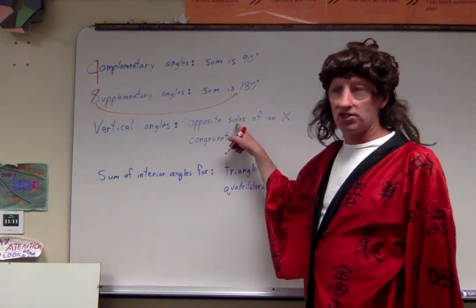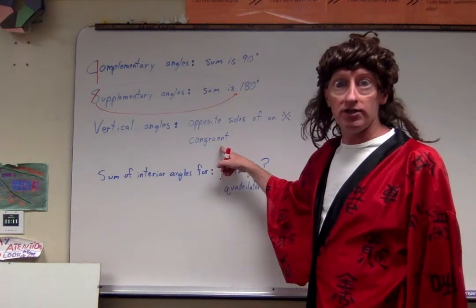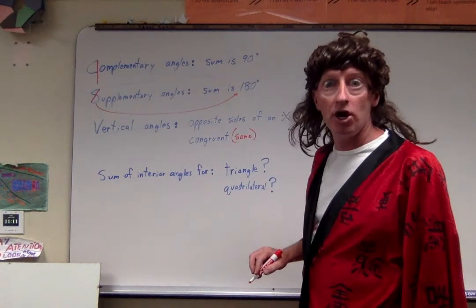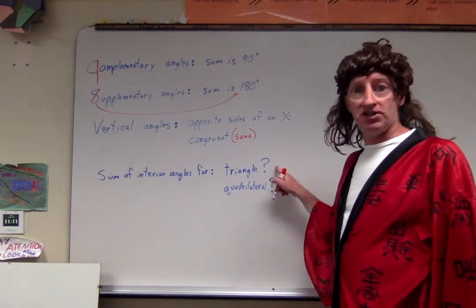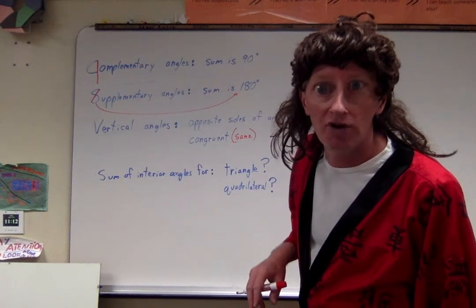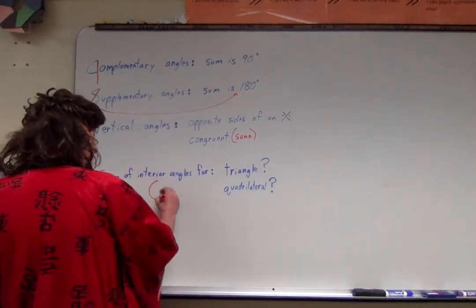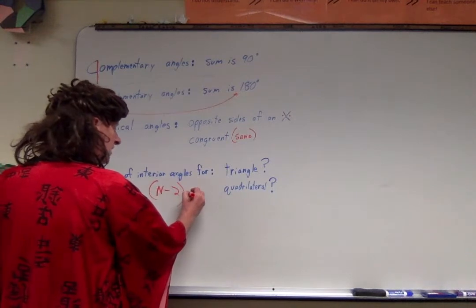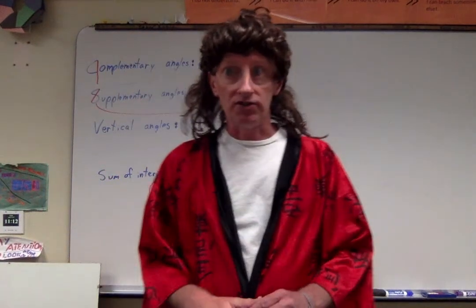What else do you need to know? Vertical angles — I often call them opposite angles because they're on opposite sides of an X. These two angles are congruent, meaning they are the exact same. I also have to find the sum of the interior angles for shapes — specifically for this test, triangle and quadrilateral. But there's a nice formula: take the number of sides a shape has, subtract two, then multiply that answer by 180, and that gives you the sum of the interior angles.